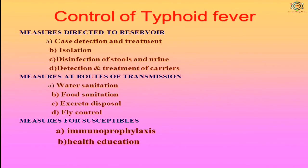Control of typhoid fever involves measures directed to the reservoir — case detection and treatment, isolation, disinfection of stools and urine, and detection and treatment of carriers. Measures at routes of transmission include water sanitation, food sanitation, excreta disposal and fly control. Measures for susceptibles include immunoprophylaxis and health education.